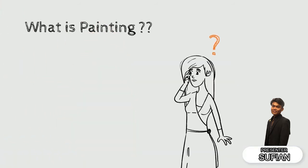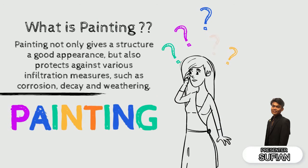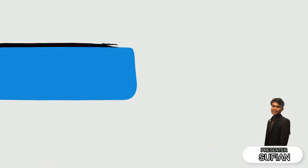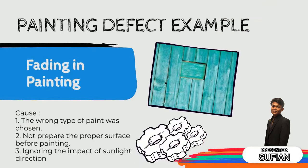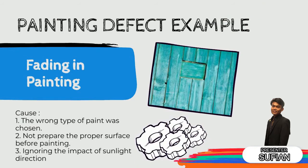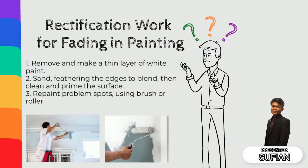Next is painting. Painting not only gives a structure a good appearance but also protects against various infiltrations such as corrosion, decay, and weathering. Fading in painting is an example of a painting defect. The causes of fading in painting are: the wrong type of paint was chosen, the surface was not properly prepared before painting, and ignoring the impact of sunlight. The rectification work for fading in painting is: first, remove and apply a thin layer of white paint; second, sand and feather the edges to blend; then clean and prime the surface; lastly, repaint the problem spot using a brush.